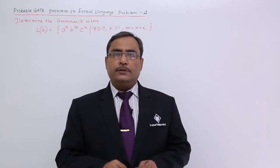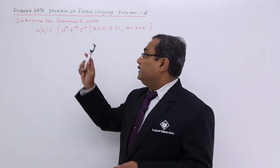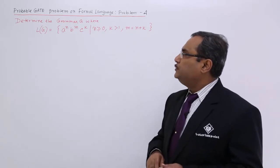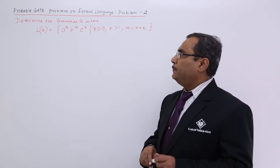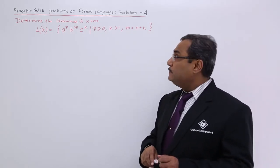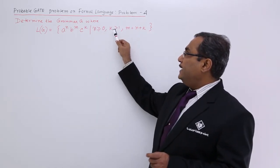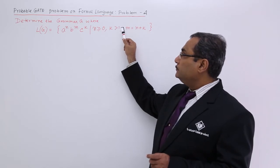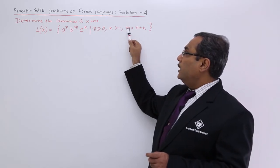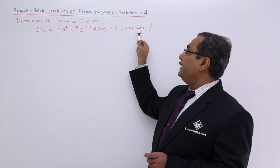Another problem on formal language. Let us come to the problem. Determine the grammar g where L of g is equal to a to the power of n, b to the power of n, c to the power of k, where n is greater than or equal to 0, k is greater than 1, and then m is equal to n plus k.